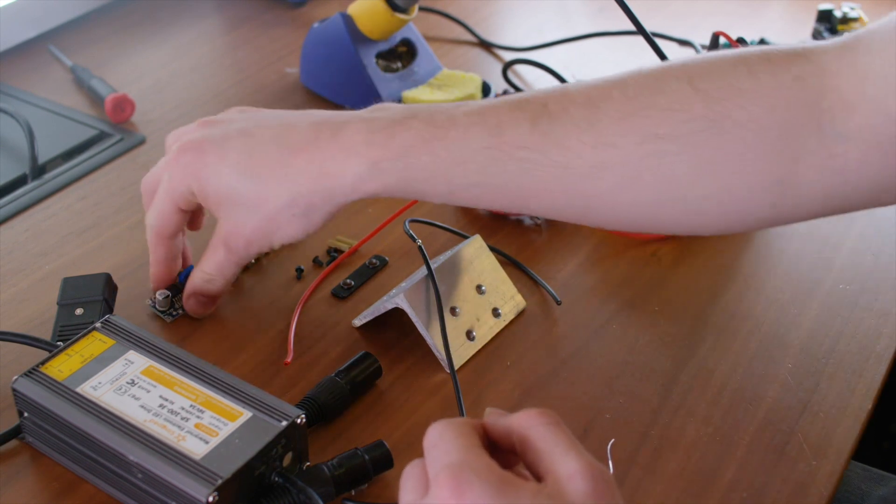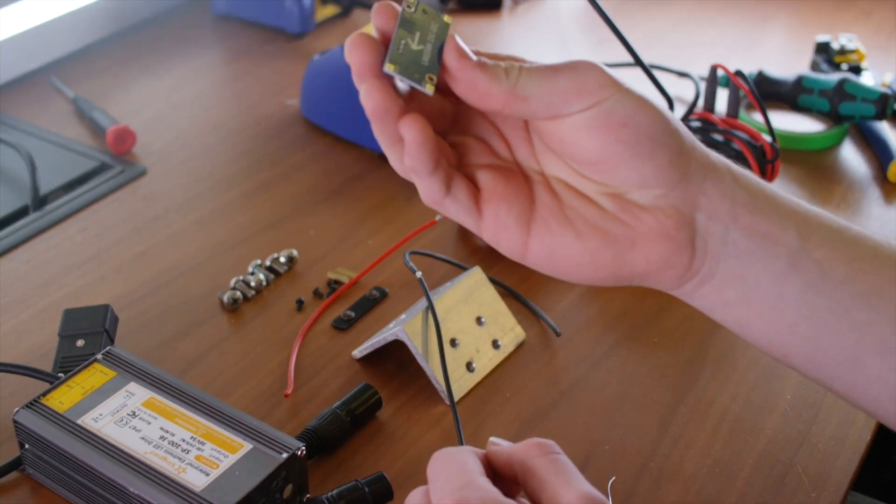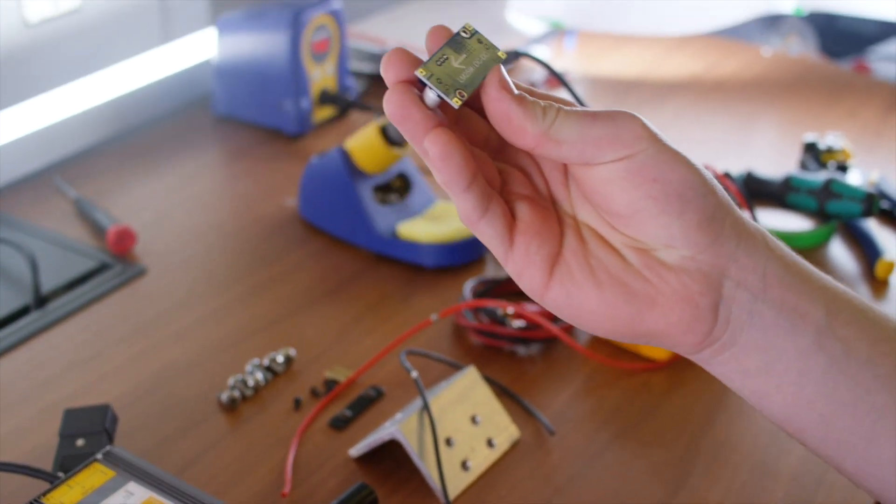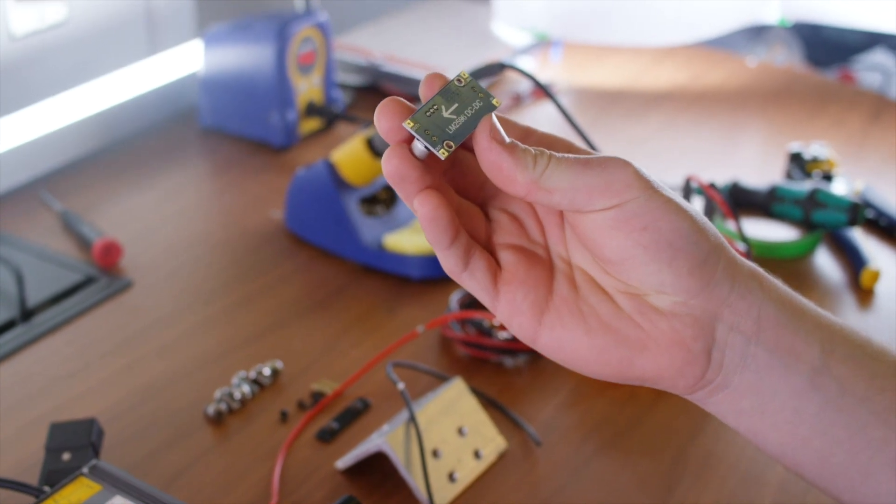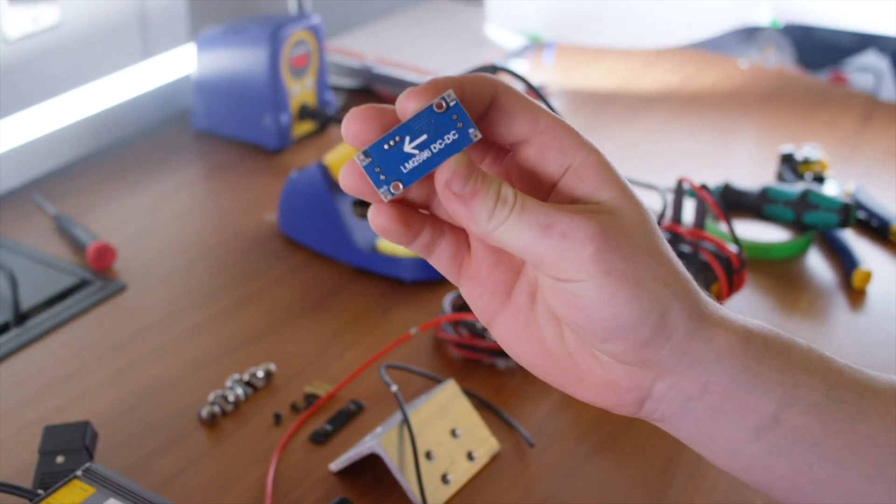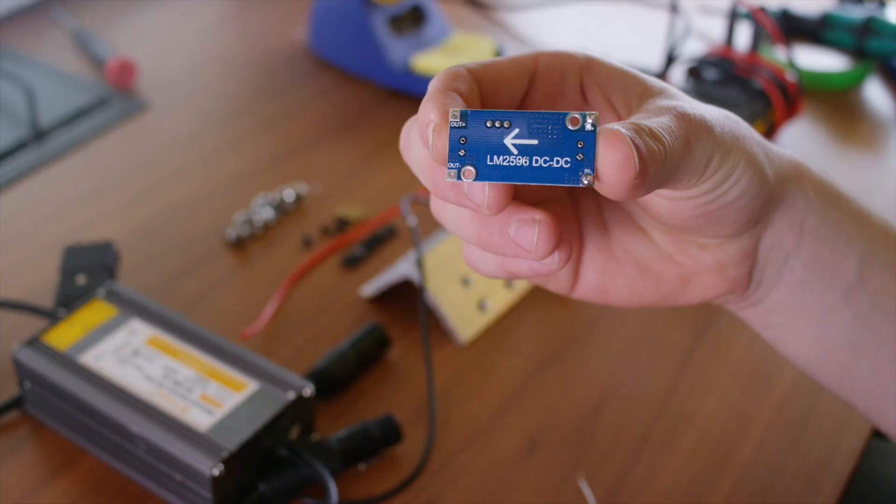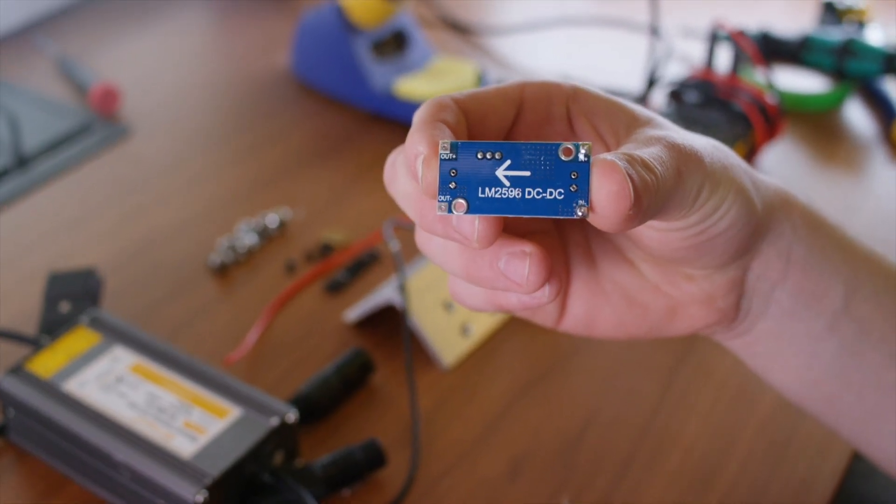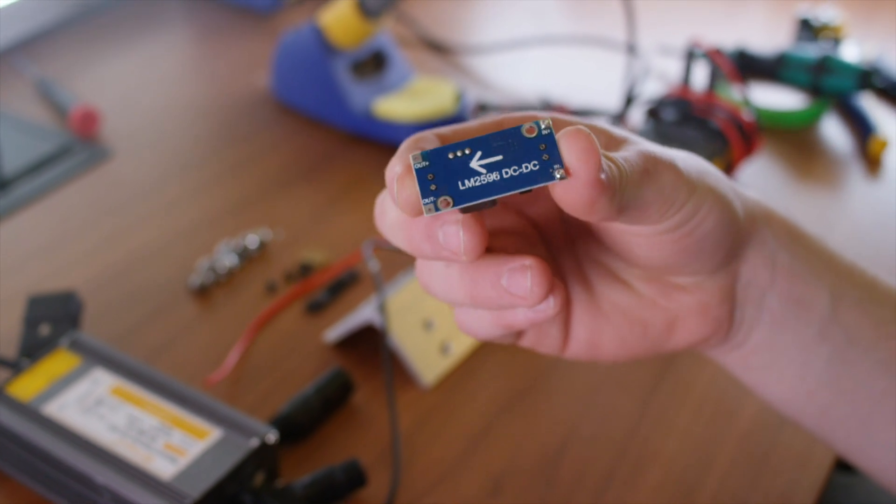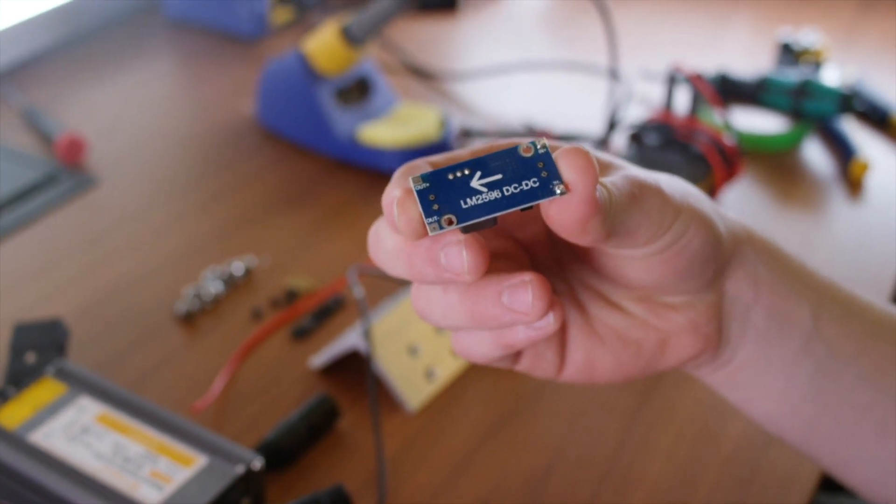Now that the wires are tinned, I'm going to go ahead and tin the back pads on the DC-DC, the ones labeled negative in and positive in. When they're tinned, they should look something like this. Now you can go ahead and solder the wires negative to black and positive to red.